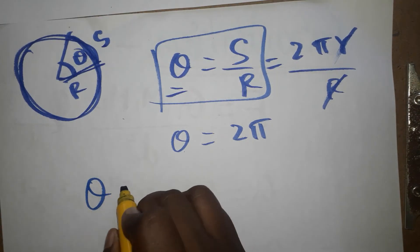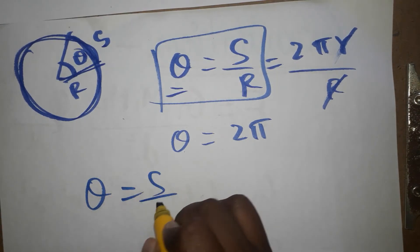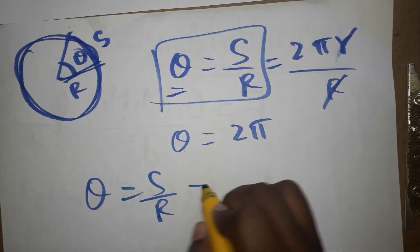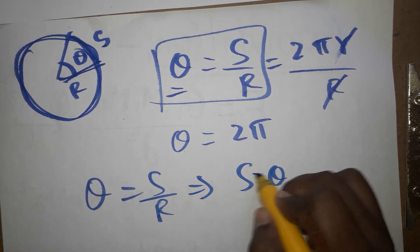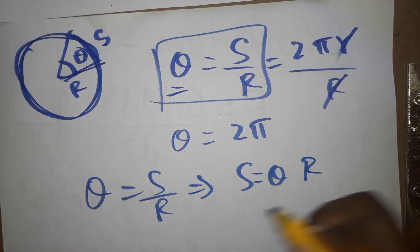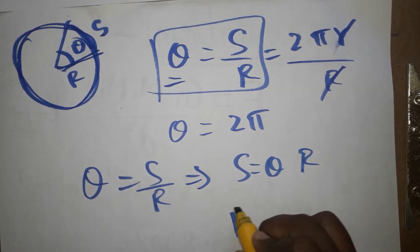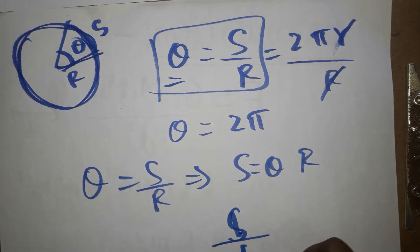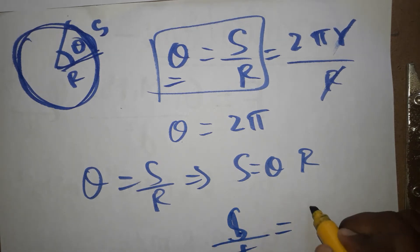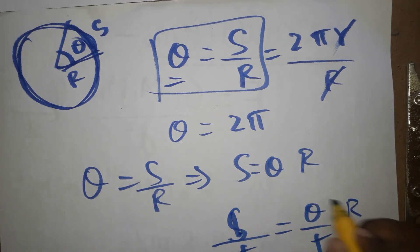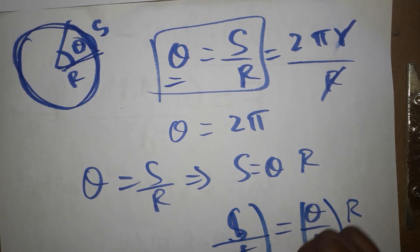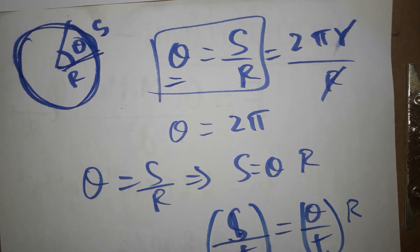So theta = s/r, which means s = theta times r. If we differentiate this equation with respect to time, displacement over time gives linear velocity, and theta over time gives angular velocity.